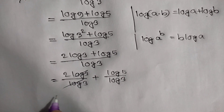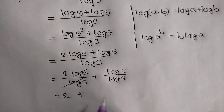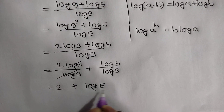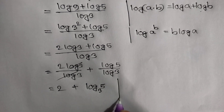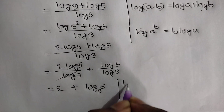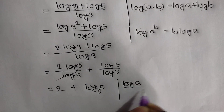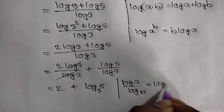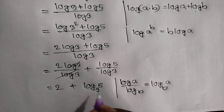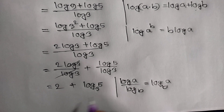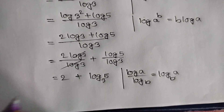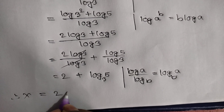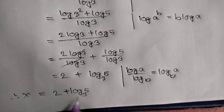This log of 3 cancels out this log of 3, so it will be remaining 2 plus log of 5 base 3, according to the formula log of a over log of b is equal to log of a base b. So the value of x is equal to 2 plus log of 5 base 3.